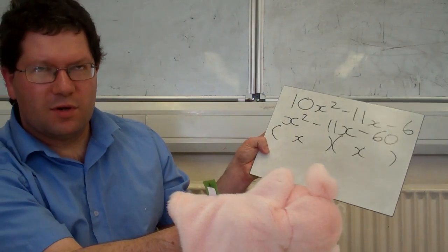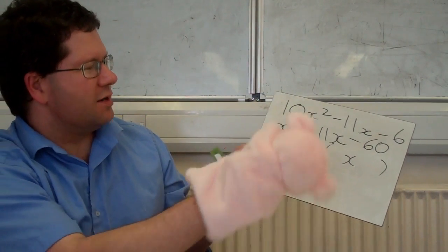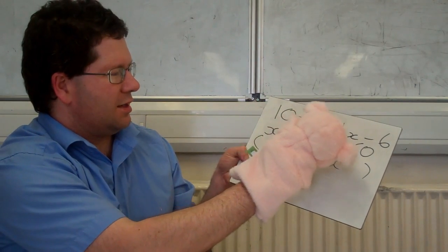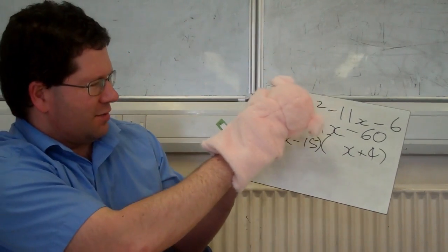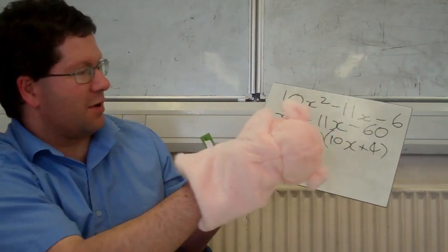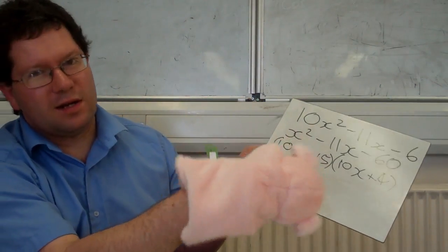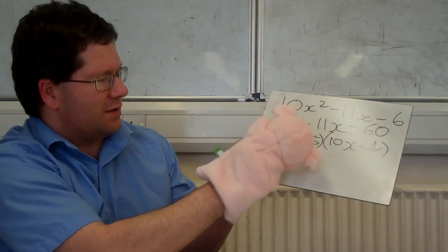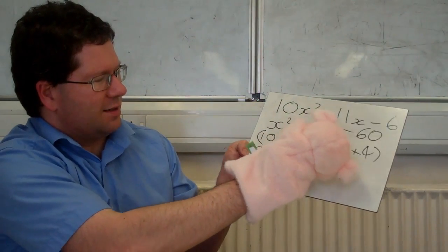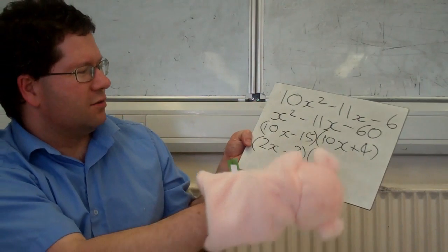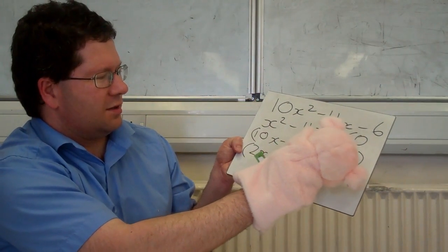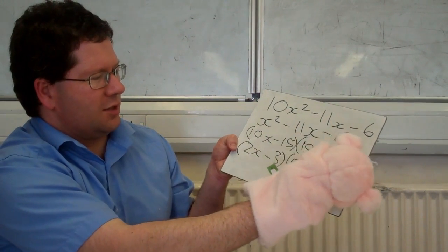And then two numbers that times to make minus 60, add up to minus 11, that'd be minus 15 and plus 4. Then this 10 that we had before, that comes back down. And then both of these brackets have something they can divide by. So 10x and 15, both of those can be divided by 5. So you get 2x and minus 3. And then your 10x plus 4, 2 goes into both of those, so that'd be 5x and 2.